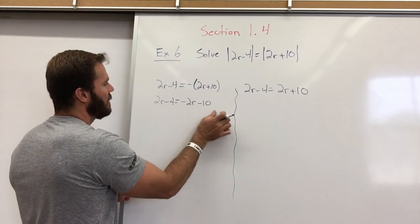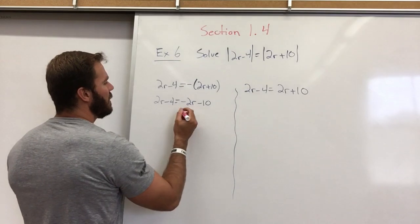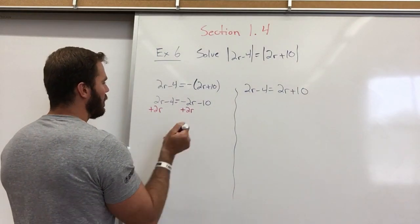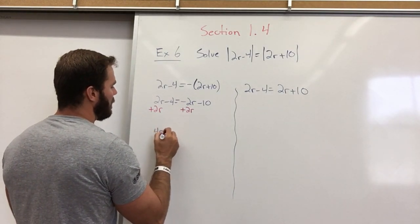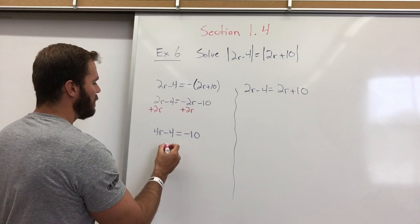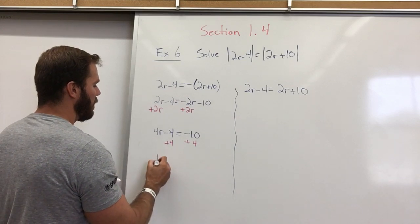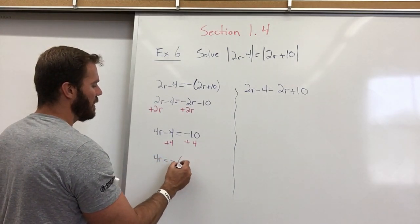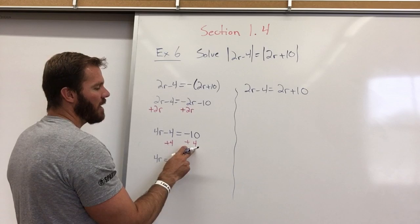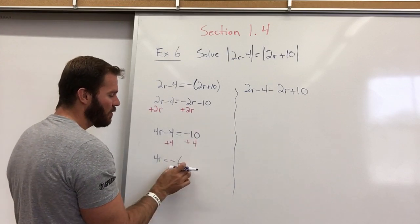So now we have our equation here. Let's join together our like variables by adding 2r on both sides, which will give you 4r minus 4 equals a negative 10. Now I'm going to add 4 on both sides and get 4r equals negative 6. A negative 10 plus 4, or you can think of it as 10 minus 4, which is 6. But because the 10 is negative, your answer will be negative because that was bigger.